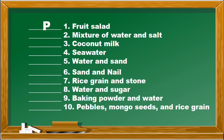Number one, fruit salad — the answer is letter P. You can separate mixtures in fruit salad by means of picking, or using your hand. Number two, mixture of water and salt — the answer is E, meaning evaporation. Number three, coconut milk — you can separate the mixture through filtering, or F. Number four, sea water — you are going to separate the mixture by using the method of evaporation. Number five, water and sand — the answer is decantation.